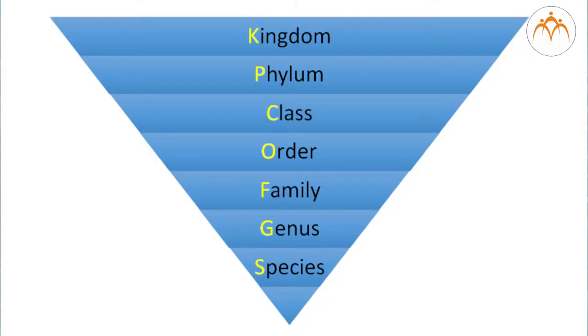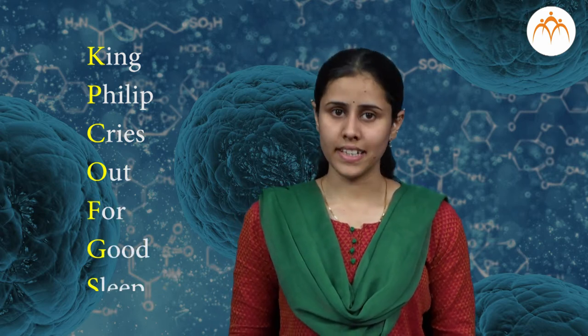Does it become a bit difficult to remember all these labels and different names? Let's devise some tricks to remember the labels of classification. Let's pick up the first letter from each word and form an acronym: King, Philip, cries, out, for, good, sleep.